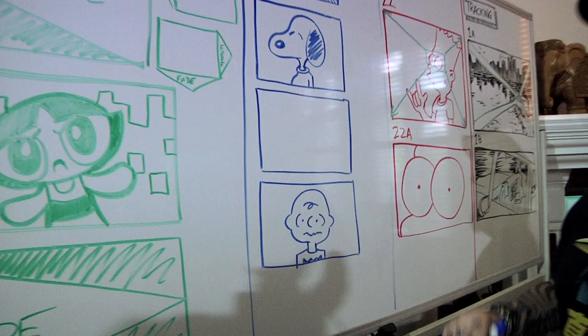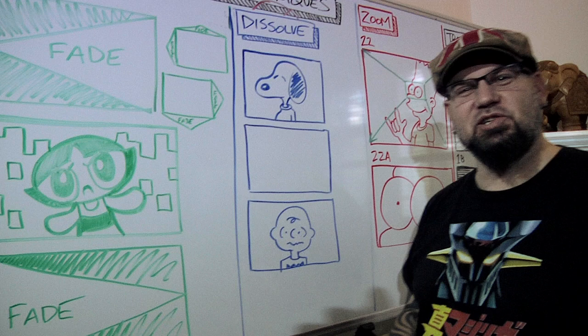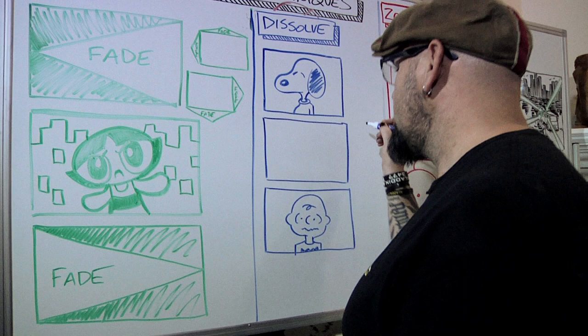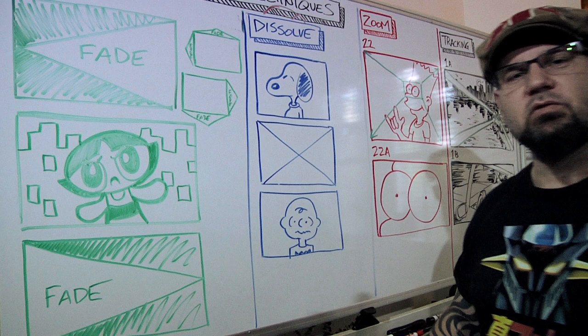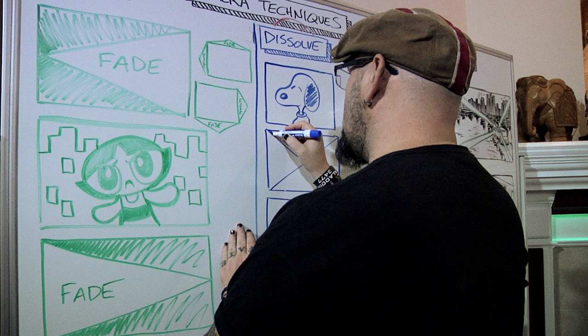I don't know why you would want to dissolve from this image to this image, but bear with me, work with me here. This is what we're going to do. The way that you indicate a dissolve, you're going to slash through from corner to corner, X-Men style. This gives you four triangles — the triangle on the top and the triangle on the bottom you want to shade in dark.